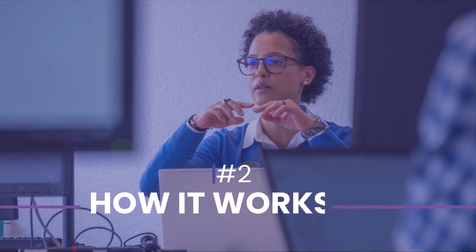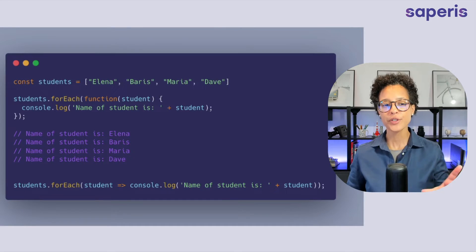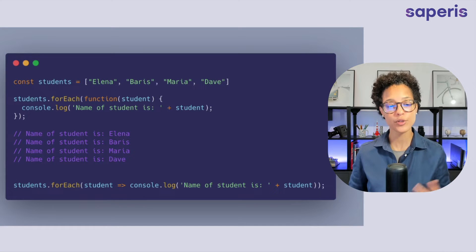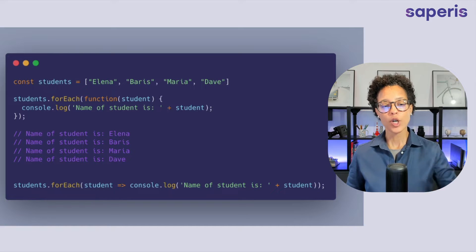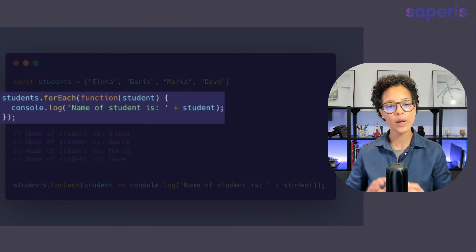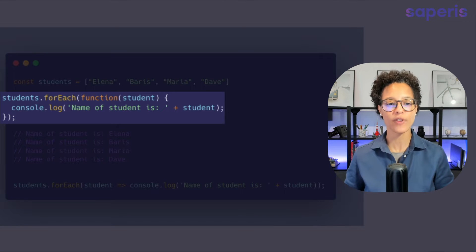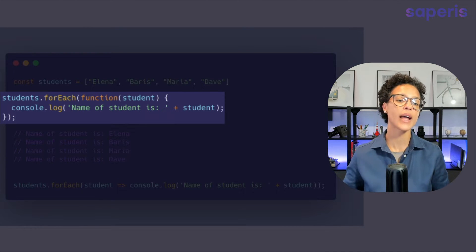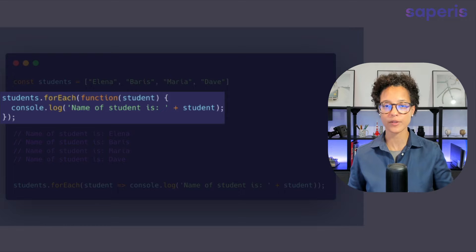How it works. Here you see an example on screen of how the forEach method is used to loop over our students array. We're calling the forEach method on our variable of students and then we're passing in a function and saying log out to the console the string name of student and then add the respective element which is currently in the loop.